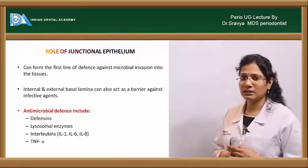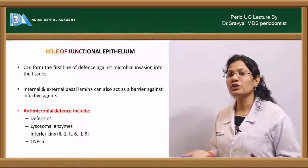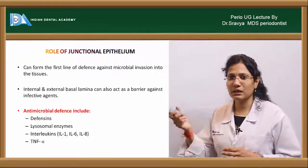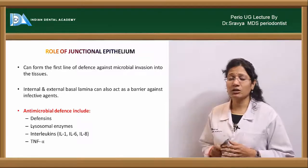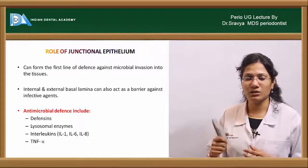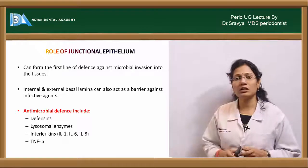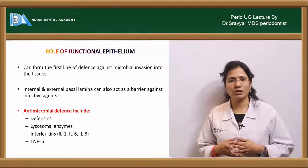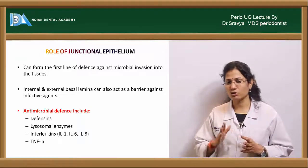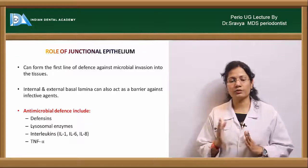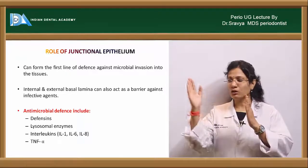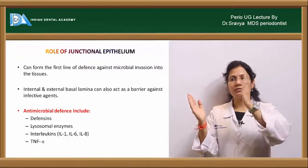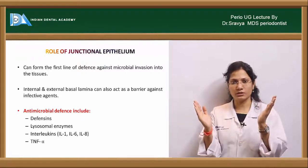The junctional epithelium has two different types of basal lamina: internal and external. The internal basal lamina faces towards the tooth structure, and the external basal lamina faces towards the connective tissue of the gingiva. Both unite at the apical portion of the junctional epithelium and act as a barrier against infective agents, not allowing anything to enter the connective tissue.